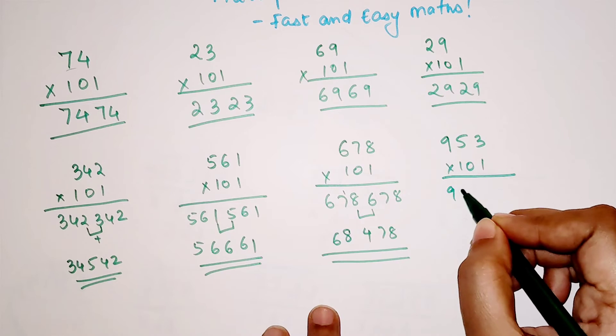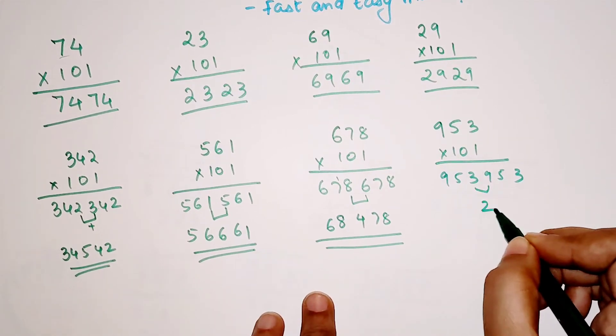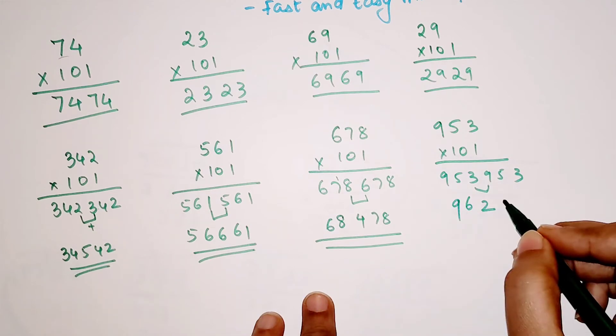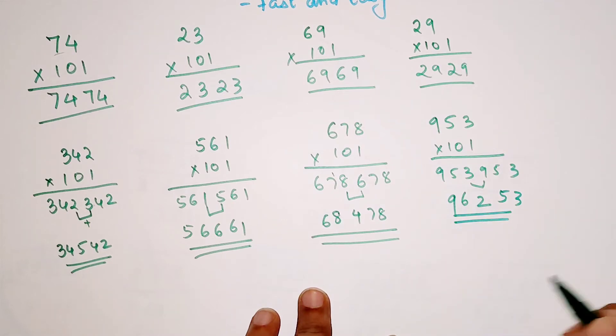What you get is 953, 953. You add this you get 12 and 1 gets carried. So you get 6 and this 9 gets written as it is and 5 and 3 also are written as it is. So 96353.